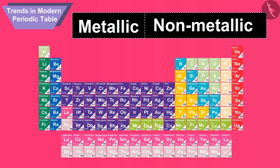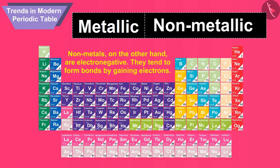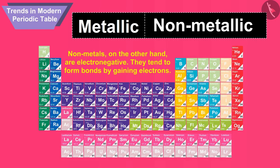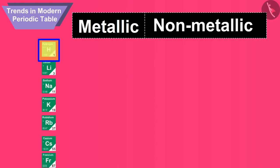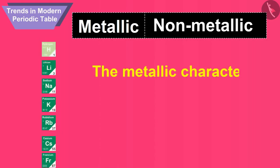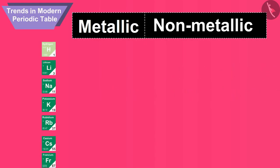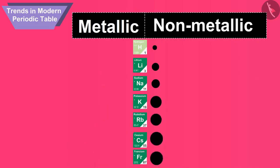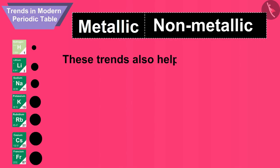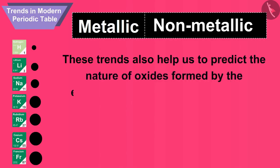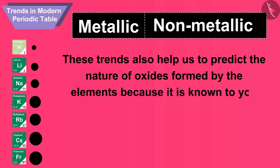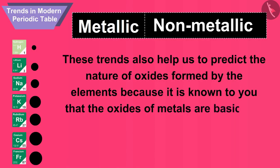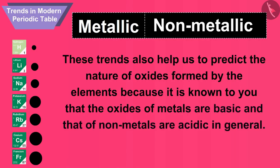Now let's discuss the trend of metallic and non-metallic character in the groups. Non-metals are electro-negative; they tend to form bonds by gaining electrons. On going down in a group of the periodic table, the metallic character of elements increases. For example, when we move down in group 1, the metallic character increases from lithium to francium. These trends also help us predict the nature of oxides formed by the elements, as the oxides of metals are basic and those of non-metals are acidic in general.